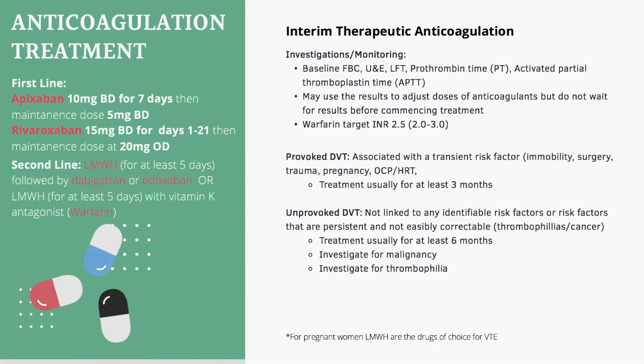Patients are divided into having a provoked DVT or an unprovoked DVT. A provoked DVT means patients have an identified transient risk factor such as immobility, surgery, trauma, pregnancy, or taking the oral contraceptive pill — treated with anticoagulant therapy for at least 3 months. For an unprovoked DVT, where no identifiable persistent risk factors are found, treatment is for at least 6 months total. NICE also suggests investigating for malignancy and thrombophilias. For pregnant women, low molecular weight heparin is the drug of choice for both DVT and PE.